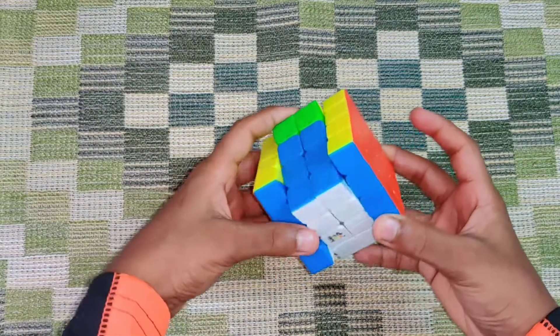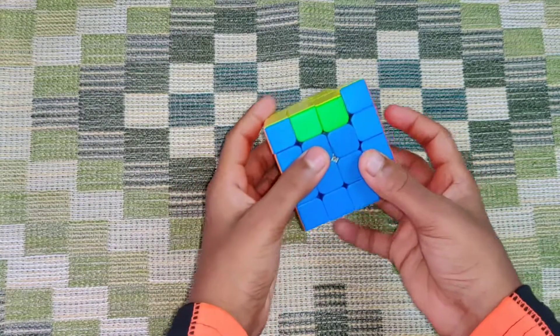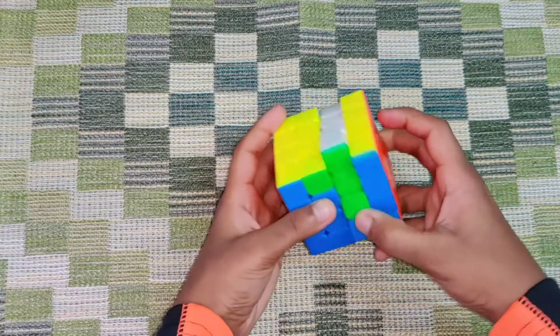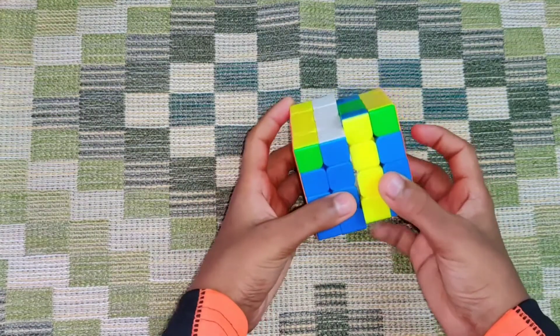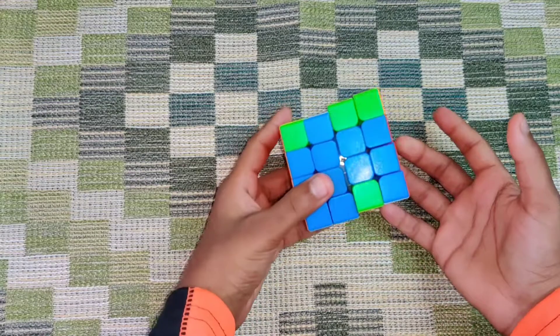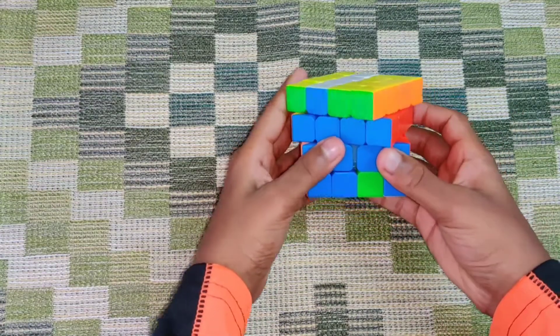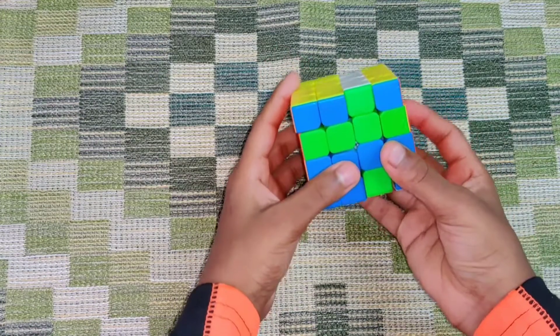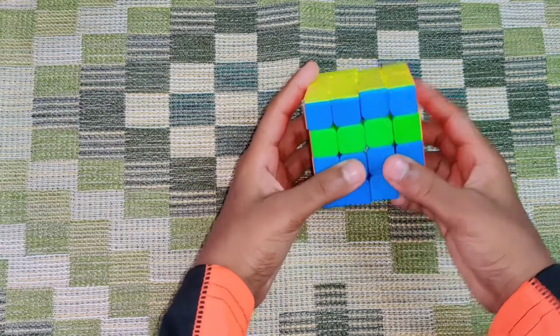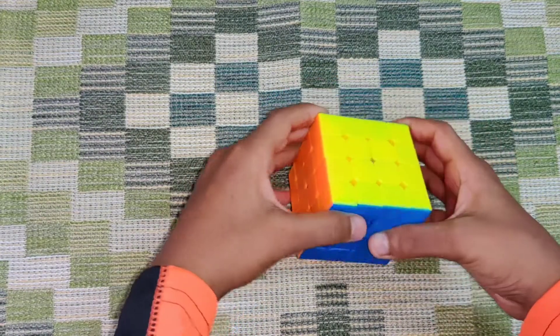So middle layer R is these two, the middle layers and the right side. This is the middle layer right two, U two, middle layer right two, U wide two. So you turn this layer along with the layer right below it. So U wide two, middle layer R two, U wide two and U two. You have solved PLL parity.